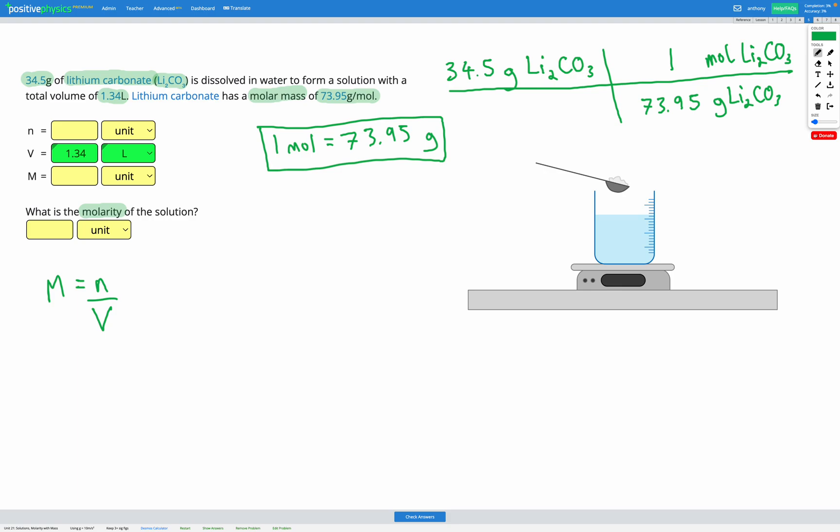Now we're ready to multiply everything on the top and divide by everything on the bottom. Any units that are the same on the top and bottom cancel. So grams lithium carbonate cancels, and we're left with 34.5 multiplied by 1 mole of lithium carbonate divided by 73.95. If we multiply that out we get 0.467 moles of lithium carbonate.